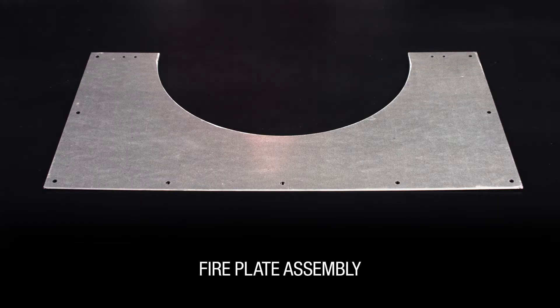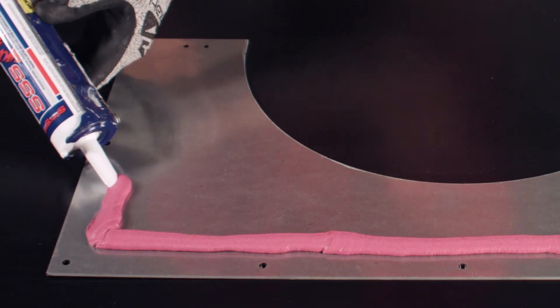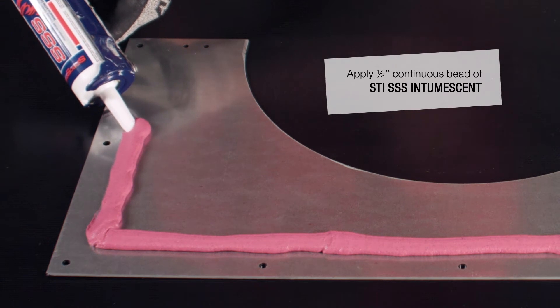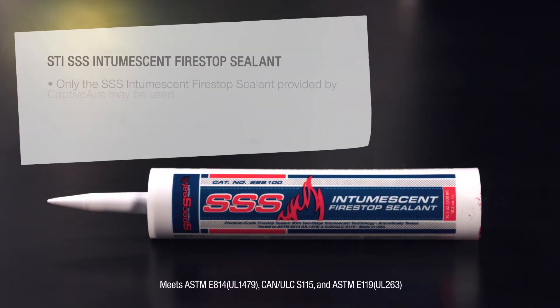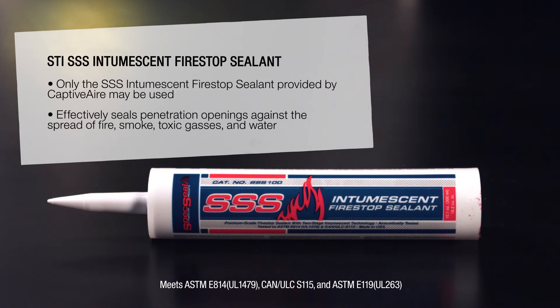Now it's time to install the fireplates. To install the fireplates on the back side of the wall, first apply a half inch continuous bead of STI SSS intumescent around the edge of the first fireplate.